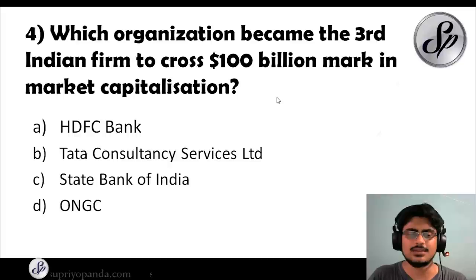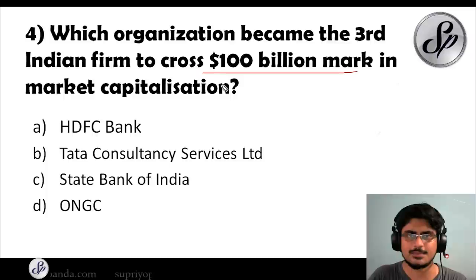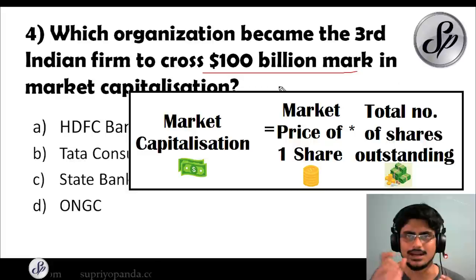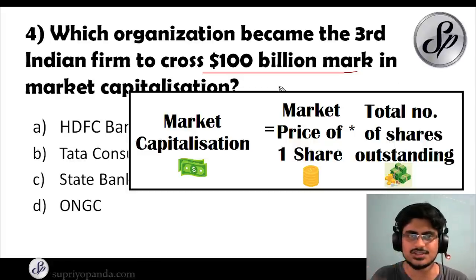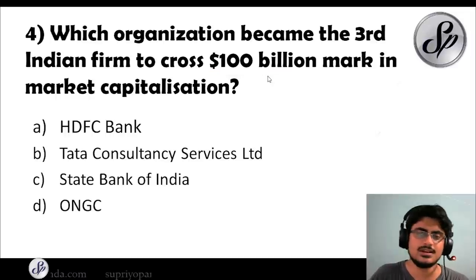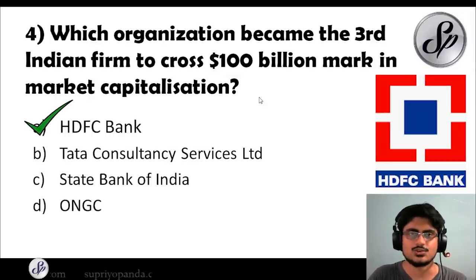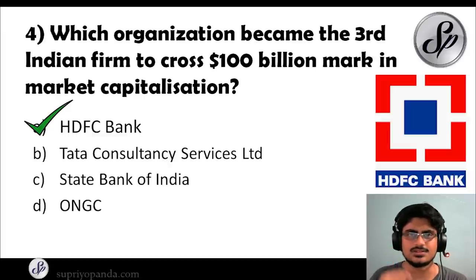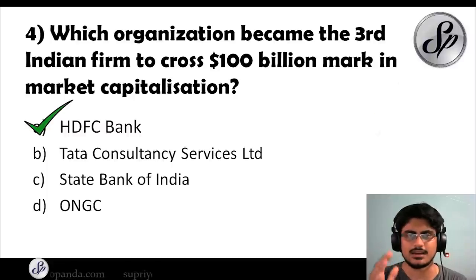Question four: which organization became the third Indian firm to cross the $100 billion mark in market capitalization? Market capitalization is the price of one share multiplied by the number of outstanding shares. The answer is HDFC Bank Limited. The first firm was Reliance Industries, the second was TCS — Tata Consultancy Services — and the third is HDFC Bank.